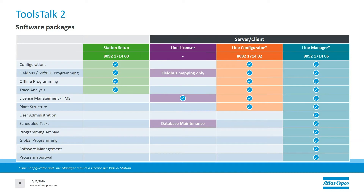There are four software packages for ToolsTalk 2. On your left is Station Setup, which is an offline version of ToolsTalk 2. The other three versions are Line Licensor, Line Configurator, and your best option, Line Manager. These three versions are server versions of ToolsTalk 2, which means you have to install them on a server and access them through a client.